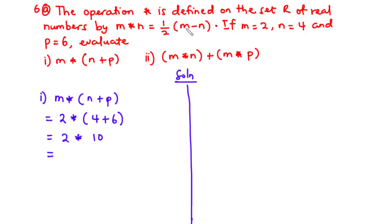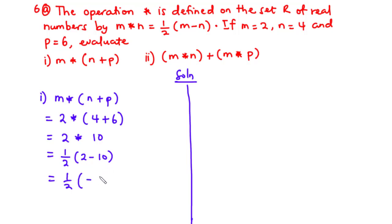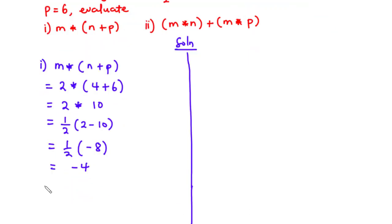Now using the rule for the operation, we have 1 over 2 times m minus n, where our m is 2 and our n is 10. So this is going to be half times (2 minus 10). Simplifying: 2 minus 10 is negative 8, and half of negative 8 is negative 4. Therefore, m star (n plus p) equals negative 4.